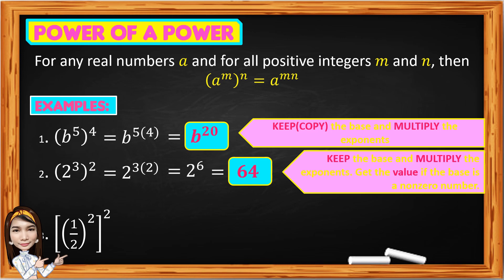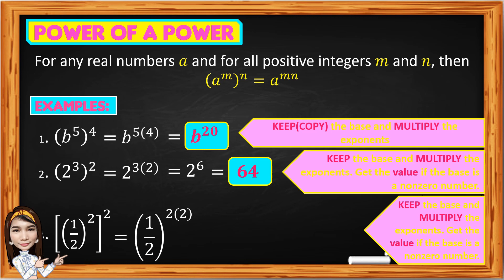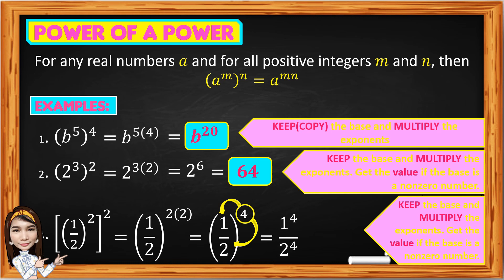Example 3: 1/2 squared, raised to the power of 2. Copy base 1/2, multiply exponents 2 times 2. We have 1/2 to the 4th power. Distribute the exponent 4 to both numerator and denominator: if there is no exponent written, it is understood to be 1. So we have 1 to the 4th over 2 to the 4th. 1 to the 4th is 1, and 2 to the 4th is 16 — giving 1 over 16.